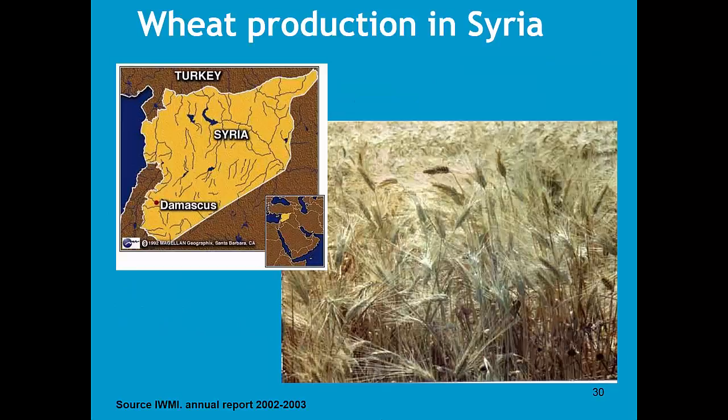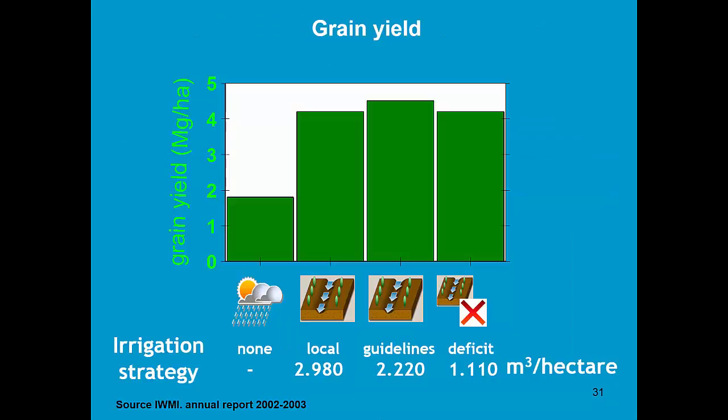Here we see an example for wheat production in Syria. The grain yield under rainfed condition was rather low, less than 2 tons per hectare. If you drill a well and let farmers irrigate, it was noticed that they consumed on top of the rainfall nearly 3000 cubic meter per hectare and got a nice yield of more than 4 tons per hectare.